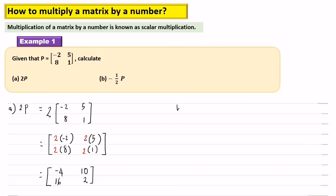Part B: negative 1 over 2 times P. Now you multiply all the elements by negative 1 over 2. So negative 1 over 2 times negative 2 equals 1.